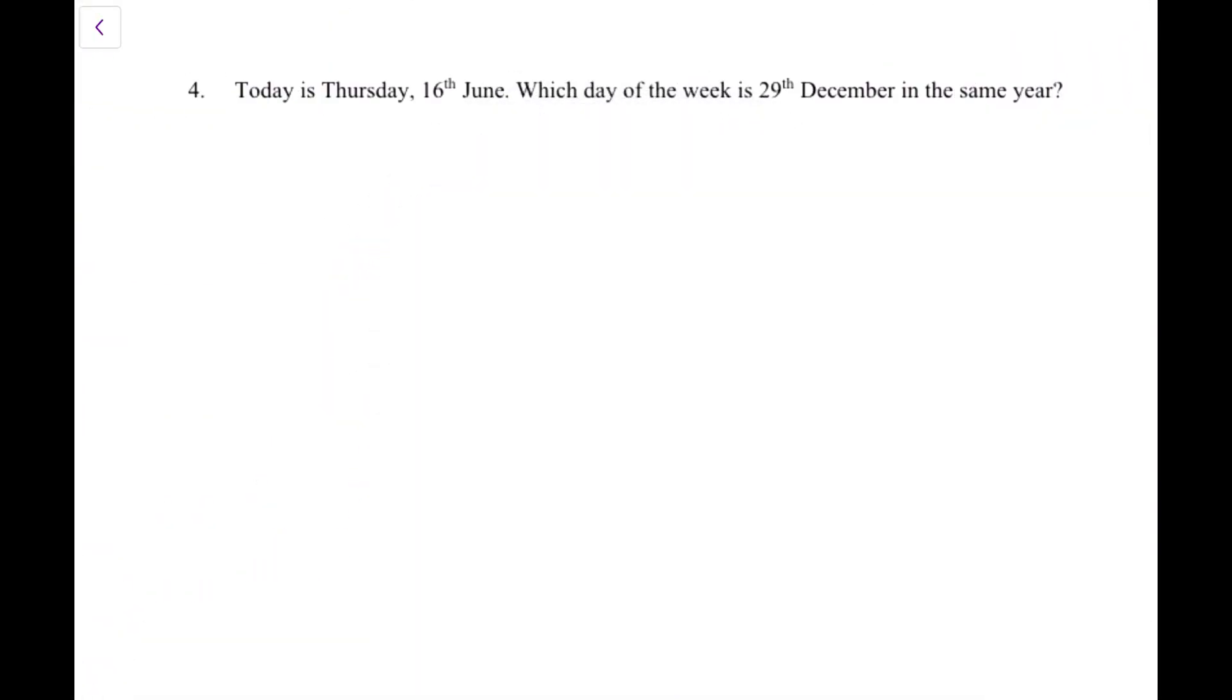This is question number 4. It required a little bit of working out, so I cleared the space. Today is Thursday, 16th June. Which day of the week is 29th of December? So we have to, in order to work it out, we have to calculate how many days are exactly there between 16th of June and 29th of December. As we all know, if 16th June is Thursday, that means exactly 7 days from then, 16 plus 7 is 23, 23rd June will again be a Thursday. Another 7, 30th of June will be another Thursday. So if we can count how many days are there in between, and then think about how many weeks has passed in all this time, we'll be able to work out what day is it on 29th of December.